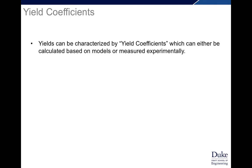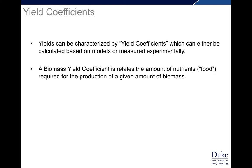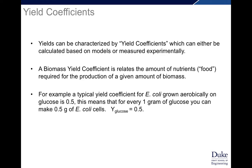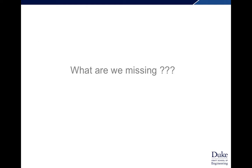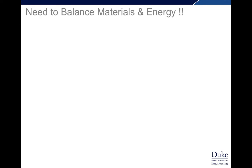Yields can be characterized by yield coefficients, either calculated from models or experimentally measured. A biomass yield coefficient relates the amount of nutrients required for the production of a given amount of biomass. You can have a yield coefficient for ammonia, glucose, or oxygen. For example, a typical experimentally measured yield coefficient for E. coli grown aerobically on glucose is 0.5 — meaning for every one gram of glucose you make 0.5 grams of E. coli cells. We calculated 0.82 from material balance alone, so we're missing something.